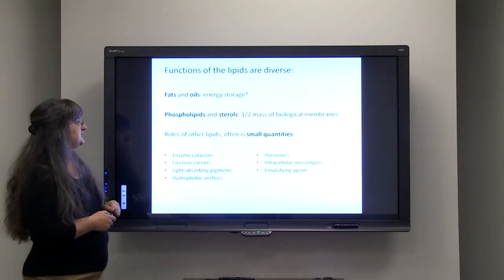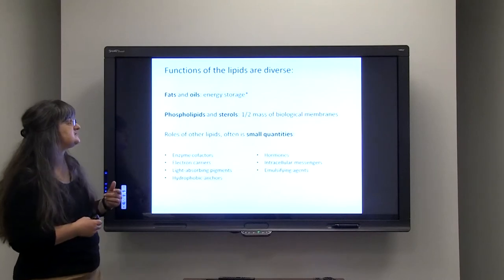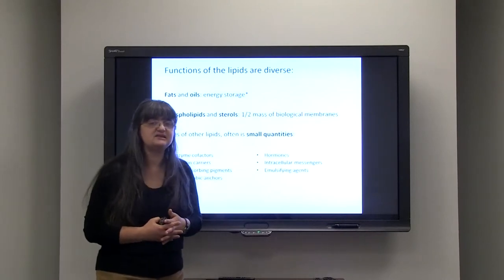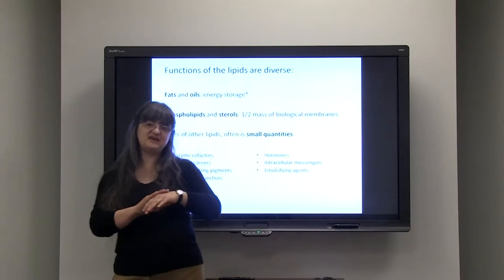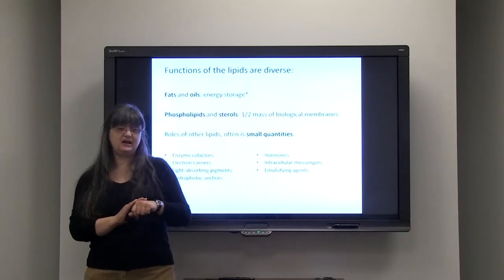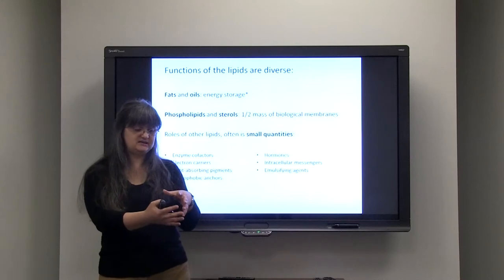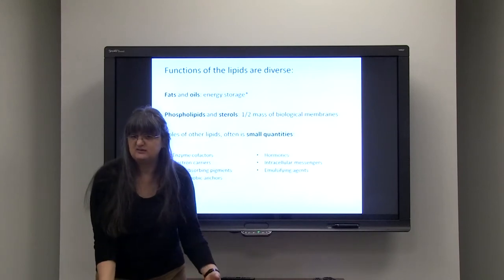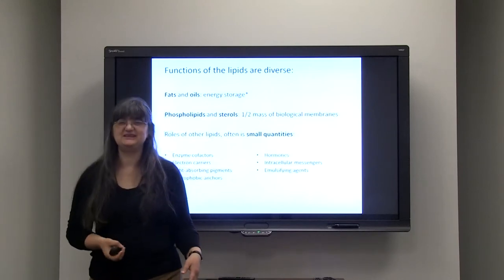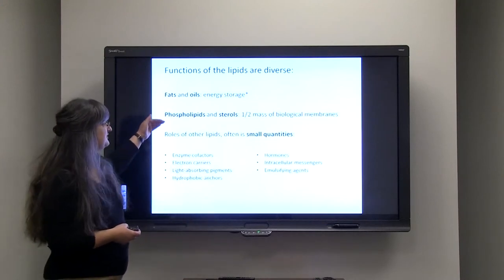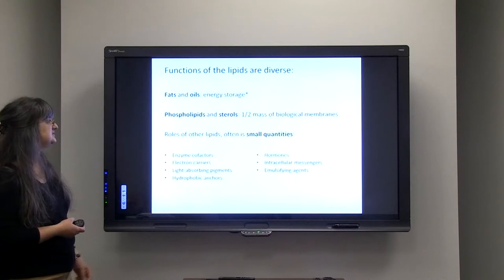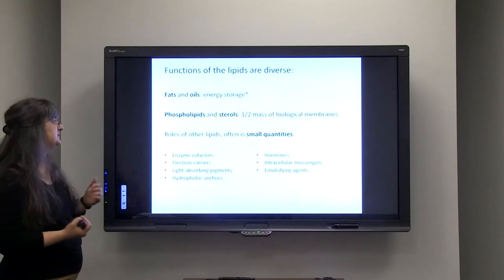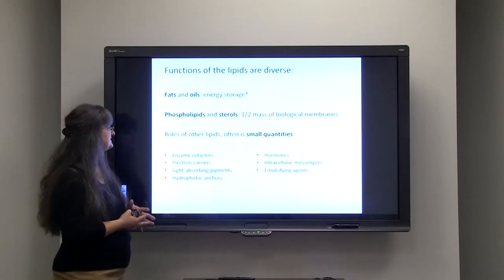Now, phospholipids and sterols consist of about half of the mass of biological membranes. Just think about if we didn't have that fatty layer, you would go to wash your hands and you would just simply dissolve. That wouldn't be quite convenient, right? So these phospholipids are there to actually protect us and to make that semi-permeable condition that enables life.